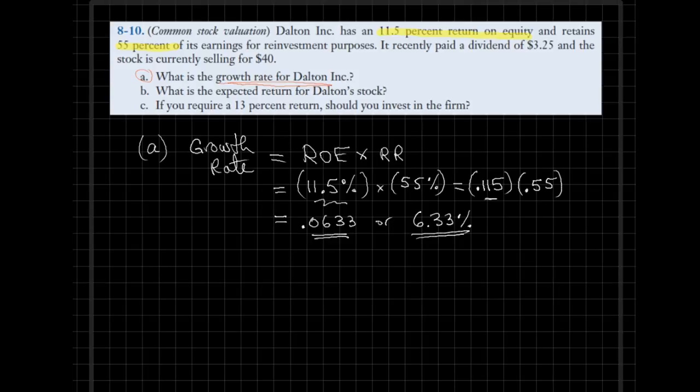Now going back to the problem, we are also given that the common stock has recently paid a dividend of $3.25. We need to be extra cautious—the keyword here is 'paid.' This represents that D0 is actually $3.25, not D1. 'Paid' means past tense, so this is the most recent dividend payment.